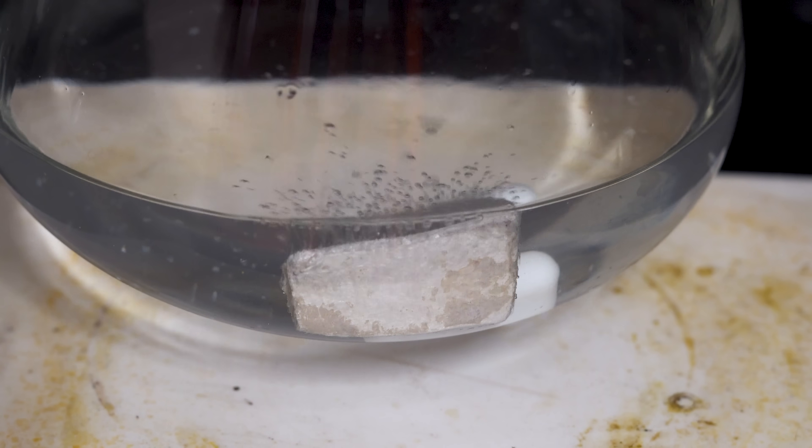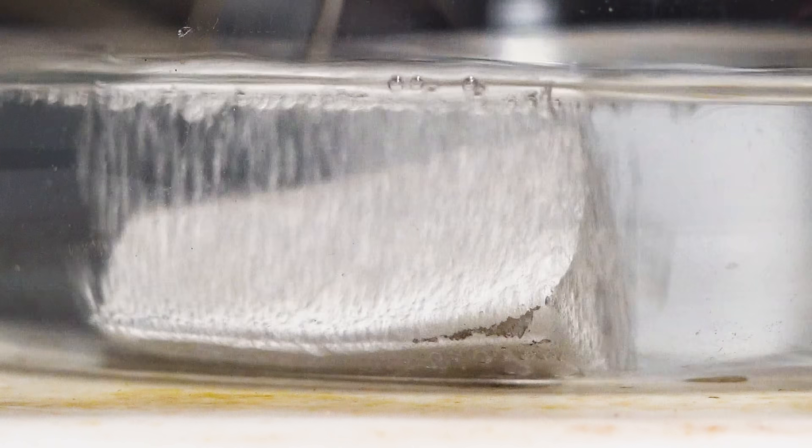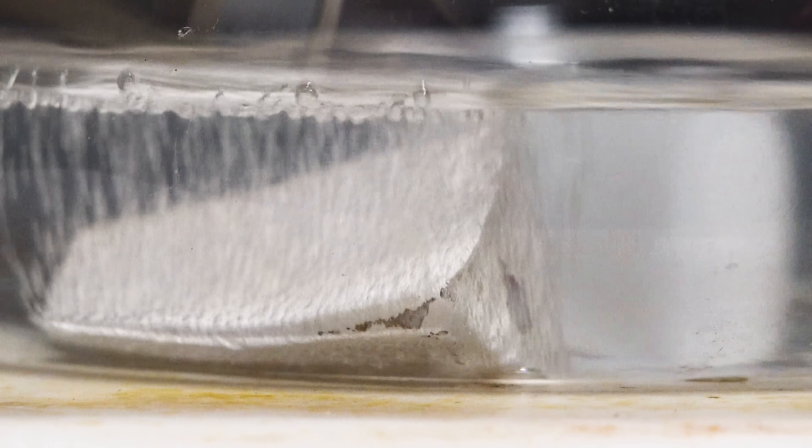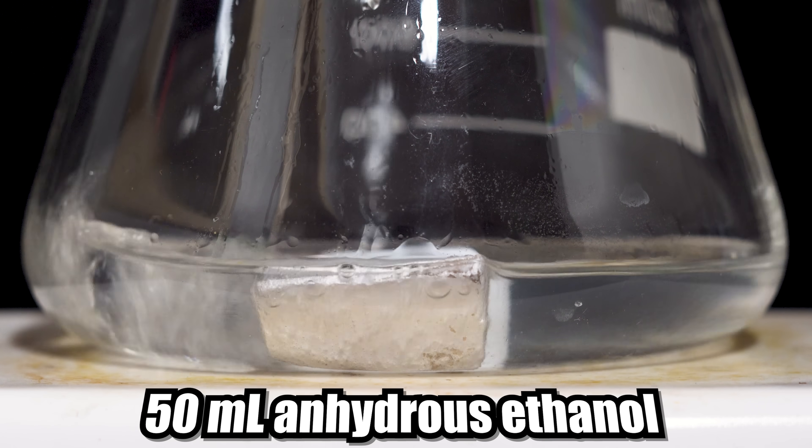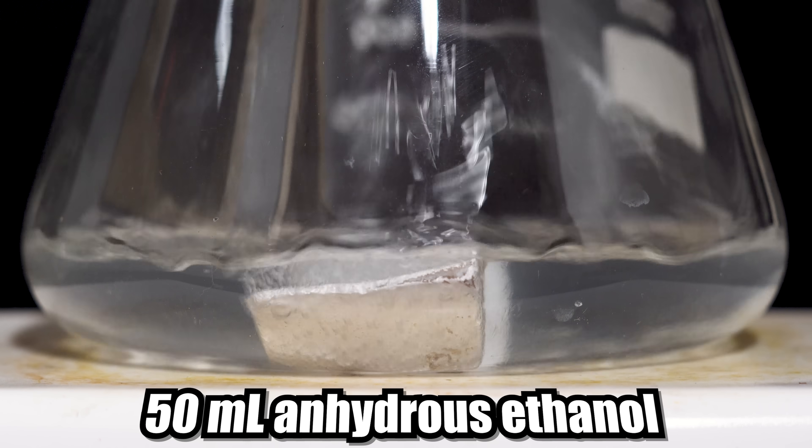I added some sodium to the flask and you can immediately see the evolution of hydrogen gas. Sodium can deprotonate a variety of alcohols and it makes the alkoxide anion. In our case, ethanol reacts with sodium to make the ethoxide anion and we have half a mole of hydrogen gas come out. There was no set amount of ethanol to be used and I just kept adding until everything was dissolved.